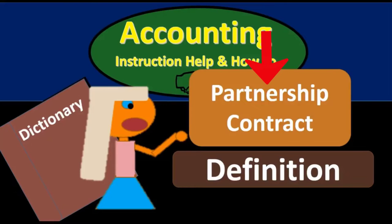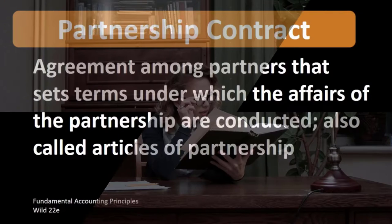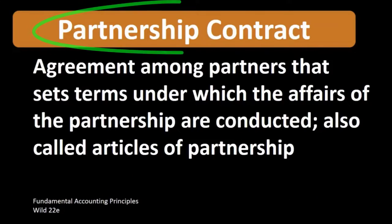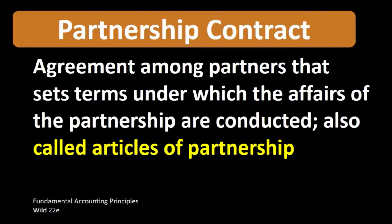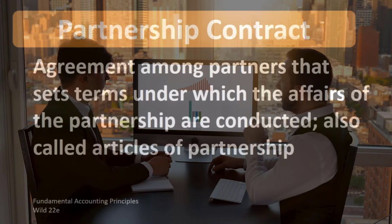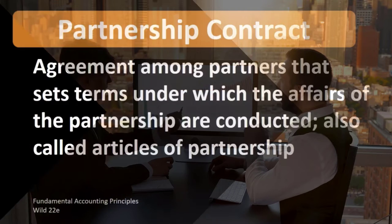In this lecture we will define partnership contract according to Fundamental Accounting Principles, Wild 22nd edition. A partnership contract is an agreement among partners that sets the terms under which the affairs of the partnership are conducted, also called articles of partnership. This applies when two or more individuals get together and start doing business.